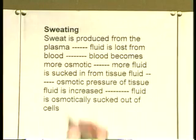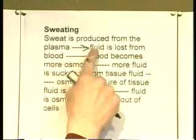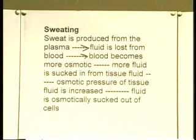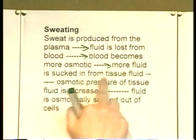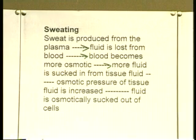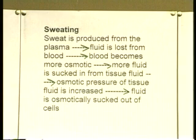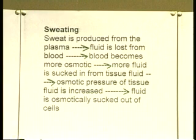In summary: sweat is produced from the plasma, so water is lost from the blood, causing the blood to become more osmotic. More fluid is therefore sucked in from the tissue fluid — the interstitial space — restoring blood volume and maintaining blood pressure. The increased osmotic pressure of the tissue fluid then draws fluid osmotically out of the cells to replenish tissue fluid volume. So we can survive for some period losing water without losing the ability to function, because blood volume is maintained.